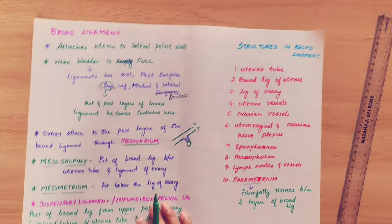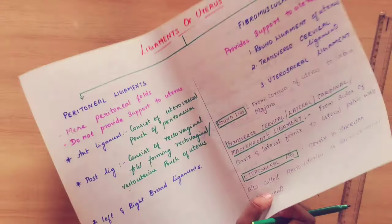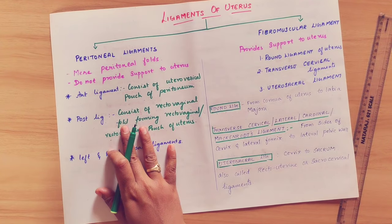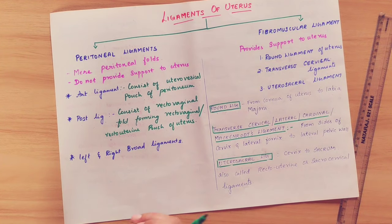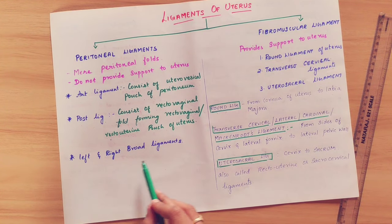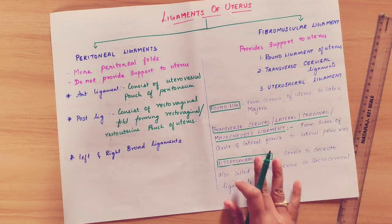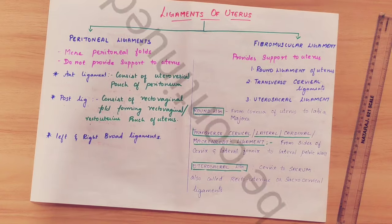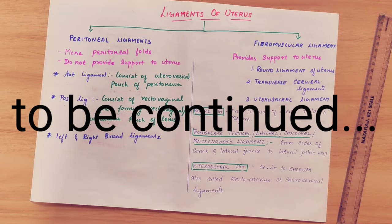This is all about the ligaments of the uterus. To summarize: peritoneal ligaments include the anterior, posterior, and broad ligaments; fibromuscular ligaments include the round ligament, transverse cervical ligament, and utero-sacral ligament. Thank you for watching.